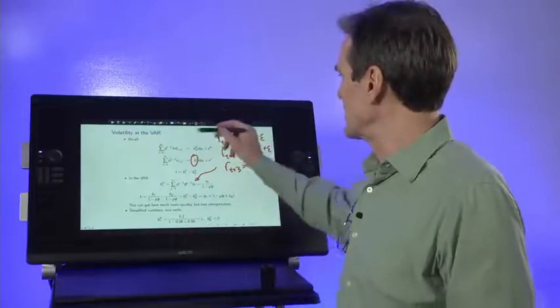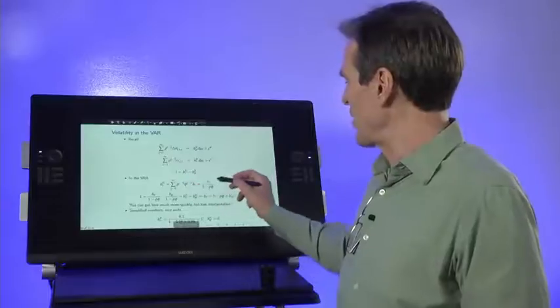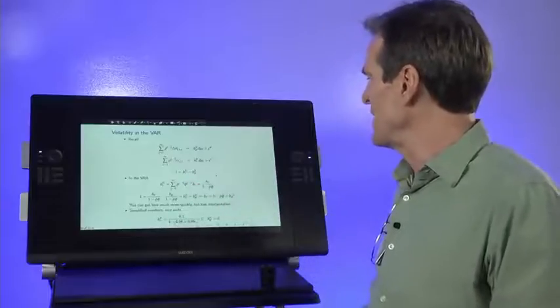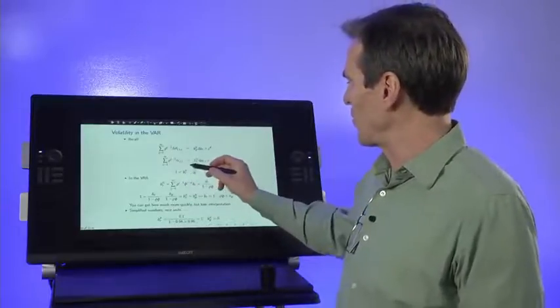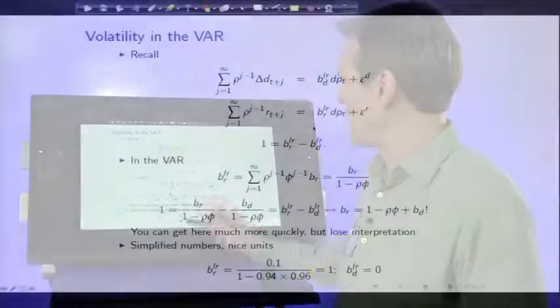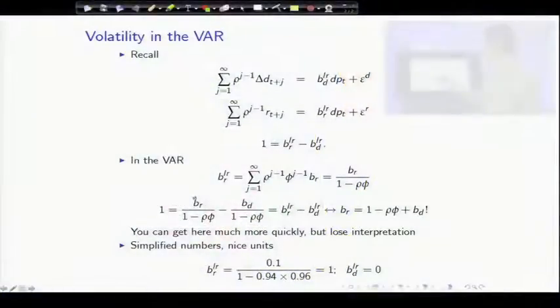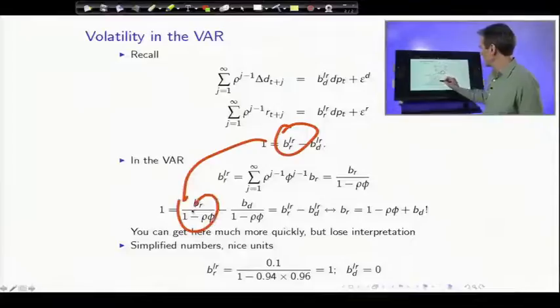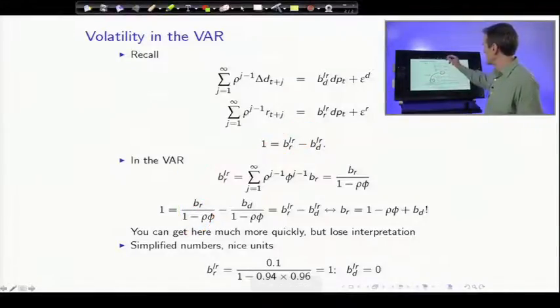Now looked at that way, so that the object we're looking for, BLR, is br over 1 minus rho phi. Our identity is that we showed that those two things add up, which says now that this is the long-run return, that's the long-run dividend growth, so br over 1 minus rho phi. We just showed that's what it is.